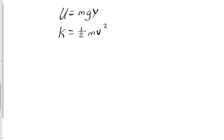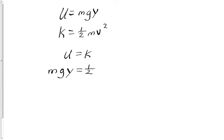Let me go over another example of manipulating variables. I have two equations: U is equal to MgY, and K is equal to one half Mv squared. I'm going to set U equal to K, and this is exactly how I should be structuring my work — in a vertical form. Please avoid going horizontally as much as you can. So I've got MgY in place of U and one half Mv squared in place of K.